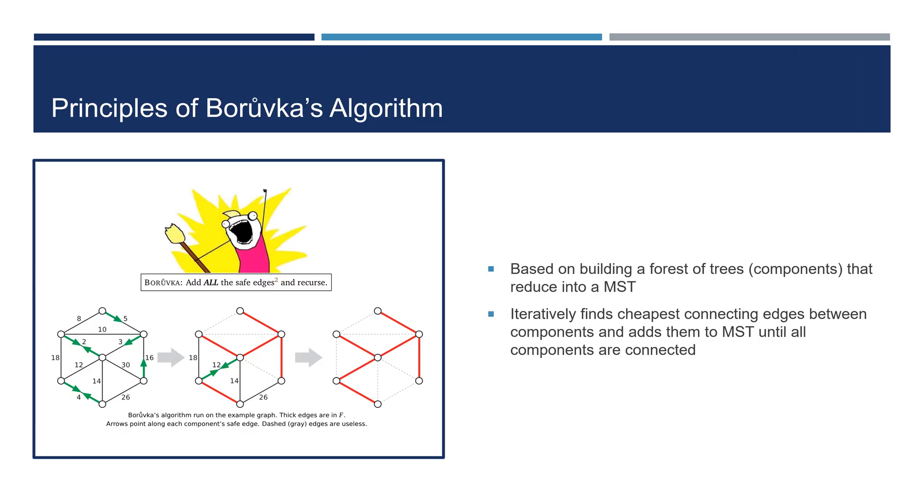The idea behind Borůvka's algorithm is to iteratively find the cheapest edges that connect different components and add them to the MST until there's only one component left.